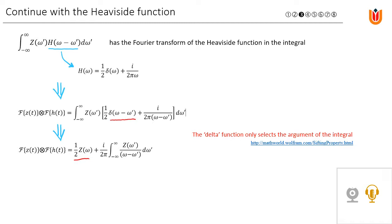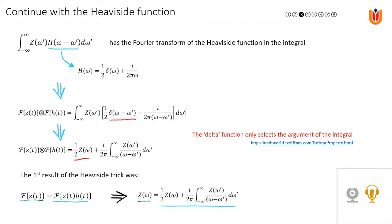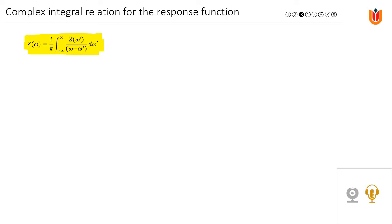Remember that the first result of our Heaviside trick was that the Fourier transform of z(t) equaled the Fourier transform of z(t)·H(t), which we derived in this expression. Equating the two sides, we have Z(ω) on the left and a term depending on Z(ω) on the right. Moving that term to the left-hand side, we end up with this complex integral relation for the response function.